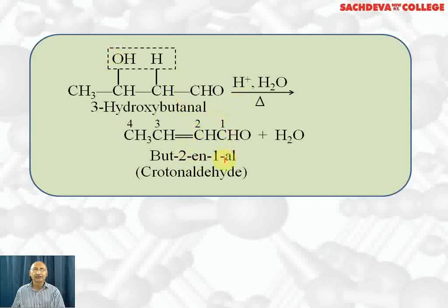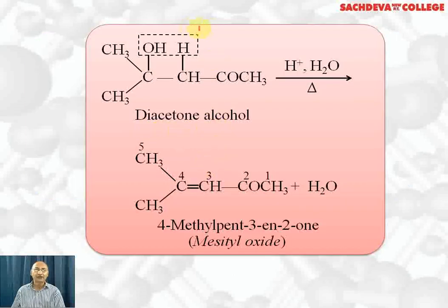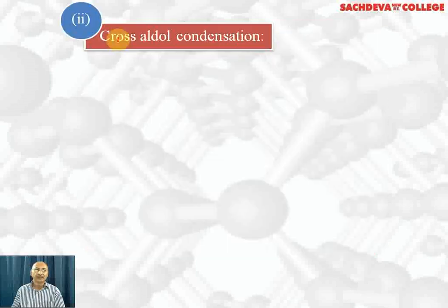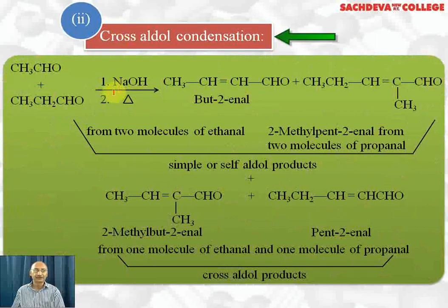The aldol, when heated further in the presence of H⁺, gives an alpha-beta unsaturated aldehyde. The popular name for this compound is crotonaldehyde; the IUPAC name is but-2-en-1-al. Diacetone alcohol also further loses a water molecule in the presence of H⁺ when heated, resulting in the formation of mesityl oxide, whose IUPAC name is 4-methylpent-3-en-2-one.